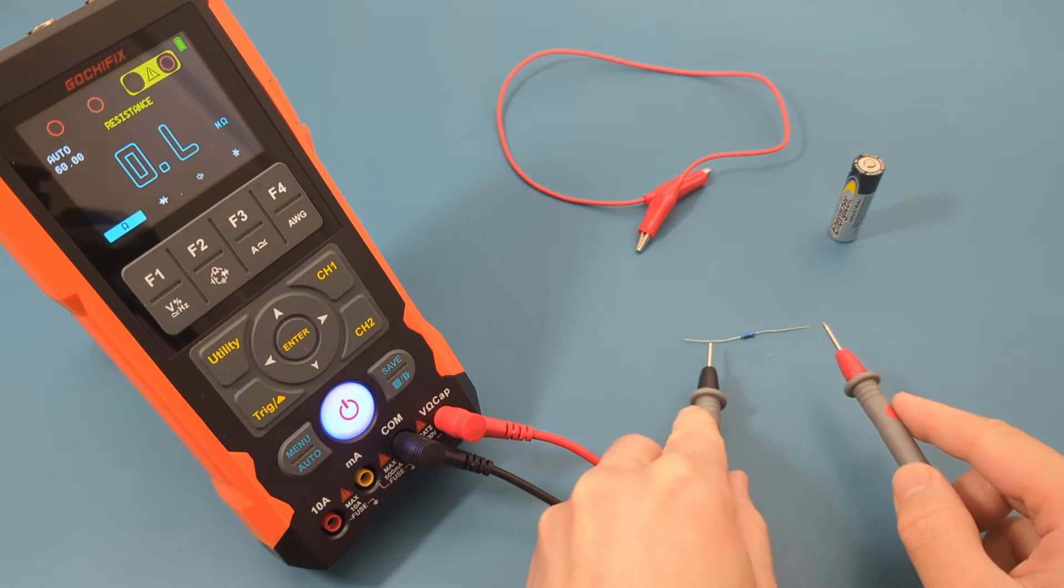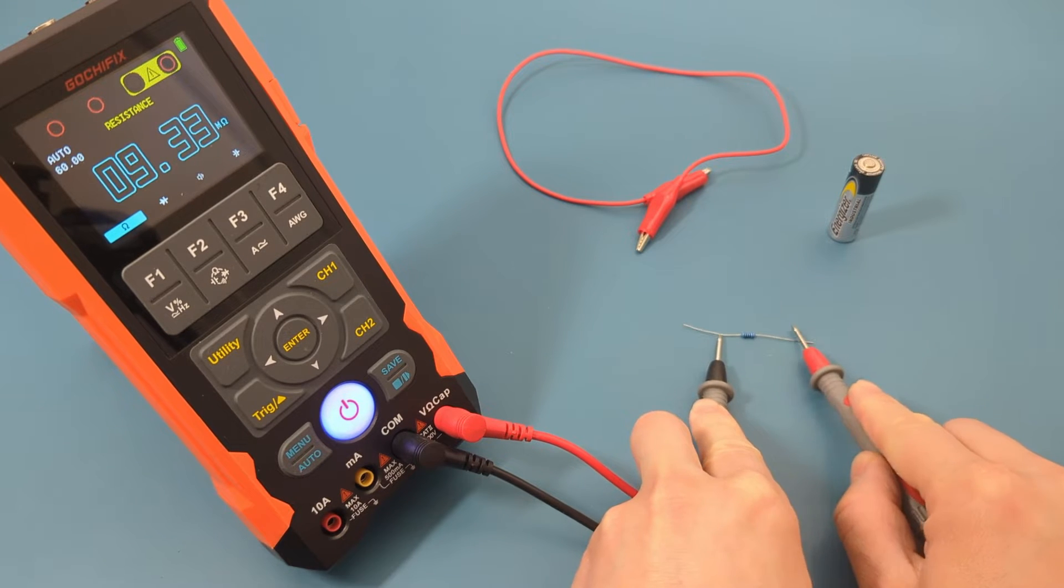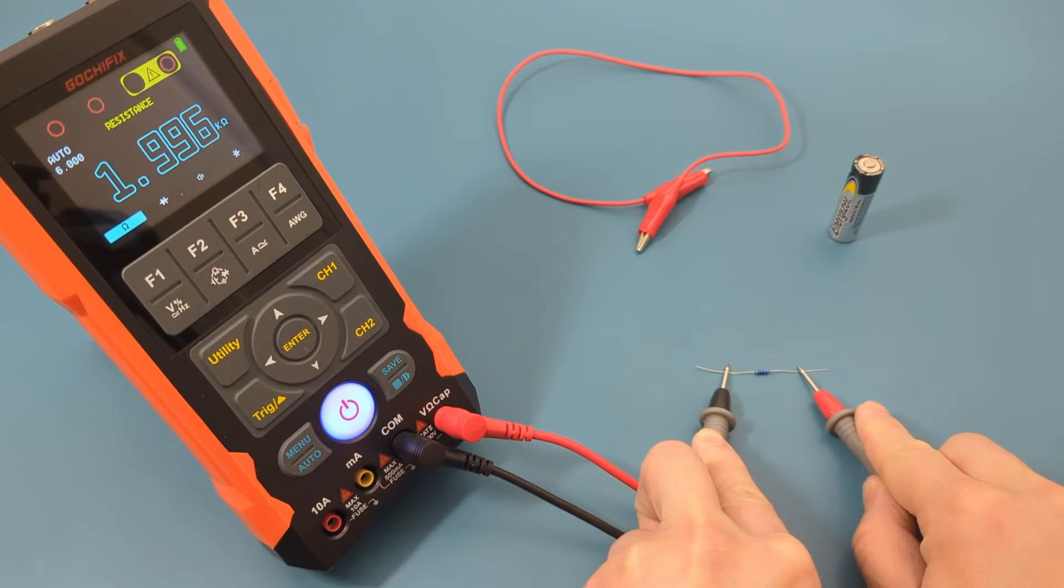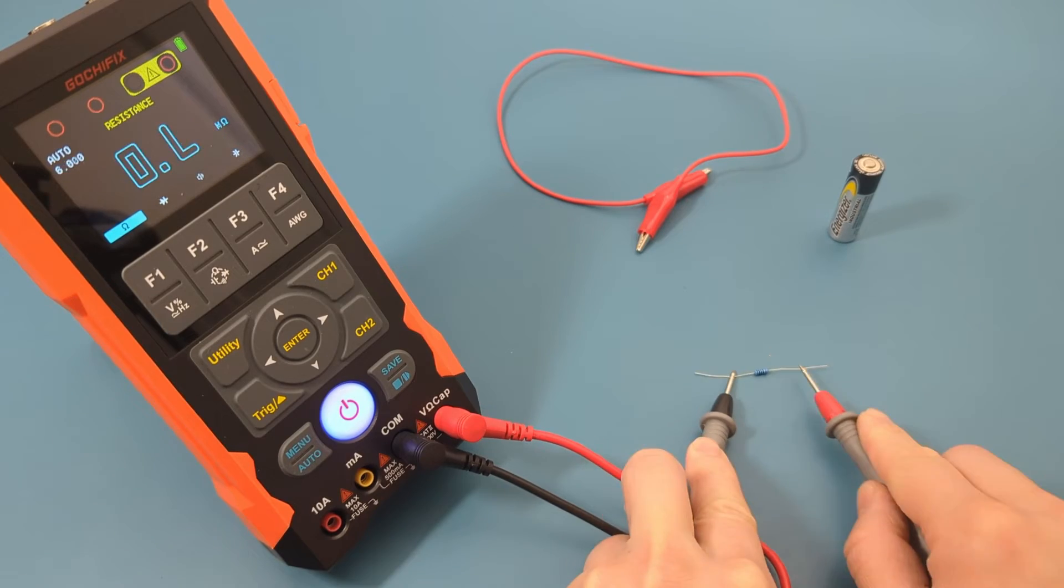Touch the probe leads on each end of the resistor. The reading is around 2000 ohms. This is what we expected.